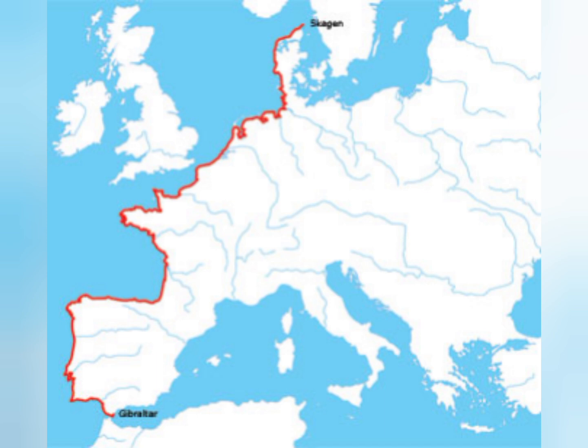Sometimes due to earth movements like earthquakes, the sea coast sinks, and a region having a lot of hills and valleys also sinks under the sea, due to which the shoreline becomes very irregular and indented, forming various kinds of bays, gulfs, estuaries, and straits. These irregular and indented coastlines form the best harbors in the world, which is why Western Europe has some of the best harbors in the world.